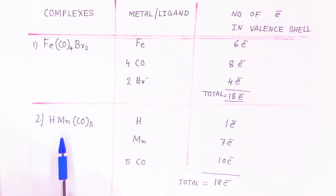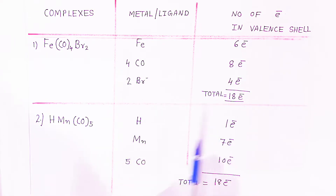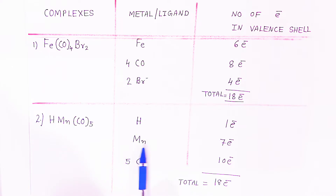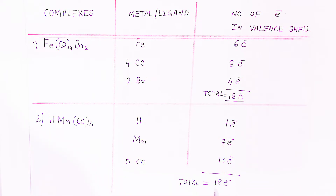In the second example, hydrogen donates 1 electron, manganese donates 7 electrons, and the carbonyl ligands donate 10 electrons. When you add these electrons — 1 + 7 + 10 — the total is 18 electrons. That means this complex is stable.